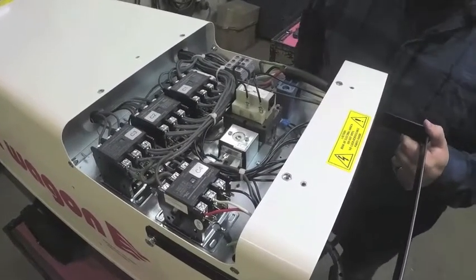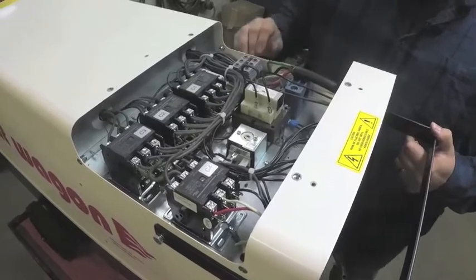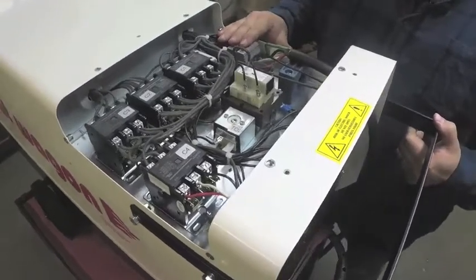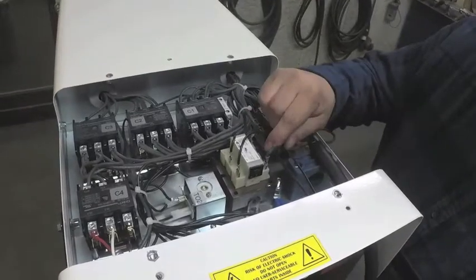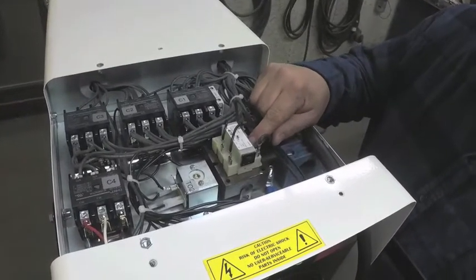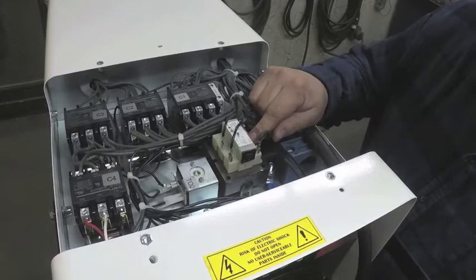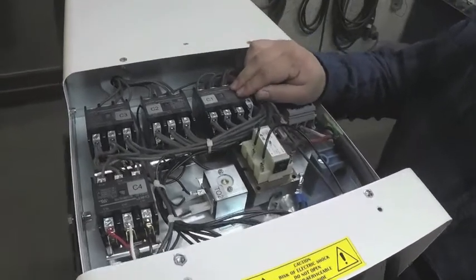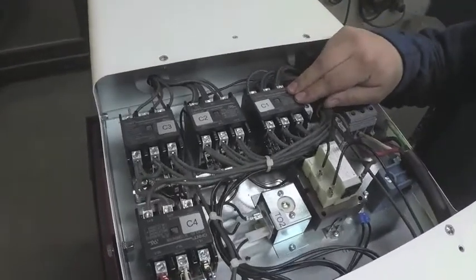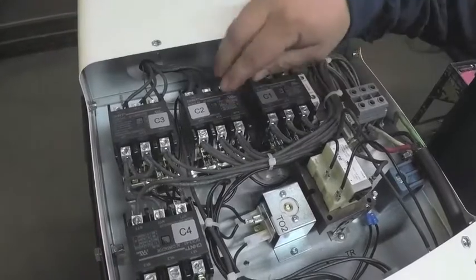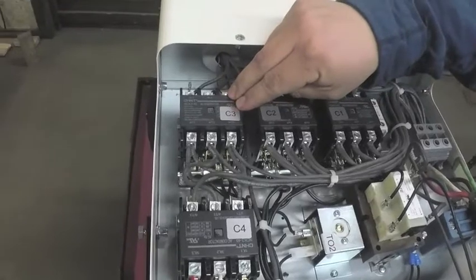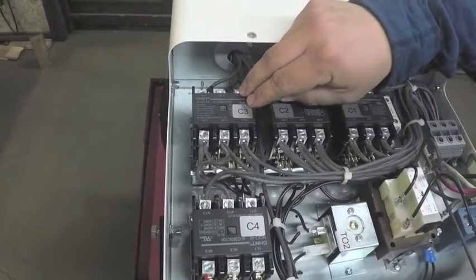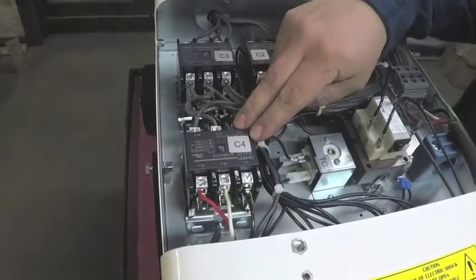Next, we're going to be talking about internal components under the hood. This is your input power terminal block. This is your 480 three phase to 24 volt AC transformer. This is your C1 relay, your first stage heating relay. C2 relay is your second stage heating relay. C3 is your third stage heating relay and C4 is your fan relay.